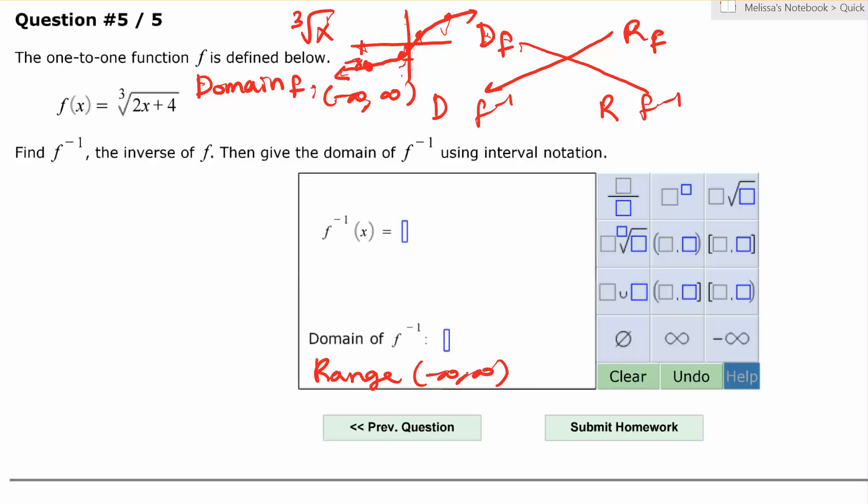Now if you look at the range of this function going up and down, there aren't any restrictions either on the y-axis. So the range of this function is also all real numbers. So then that means the domain, the range becomes the domain, is going to be negative infinity to infinity.